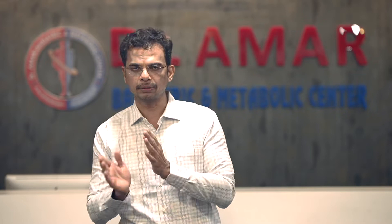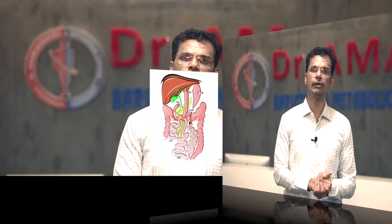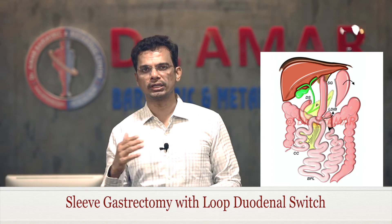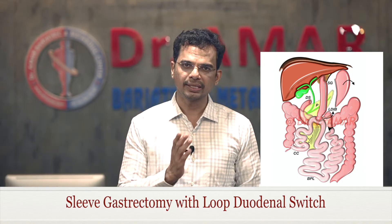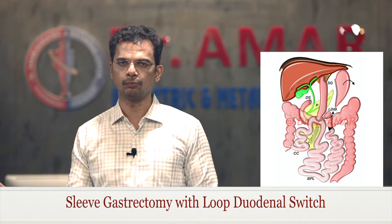The third variation is called sleeve plus bypass surgeries, which means combining sleeve gastrectomy and adding a bypass as well. Based on how the bypass is added, there are several types of sleeve plus bypass combinations. One is sleeve gastrectomy with loop duodenal switch, also known as single anastomosis duodenal bypass with sleeve.